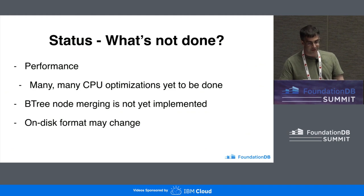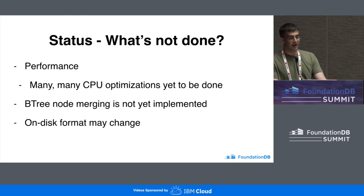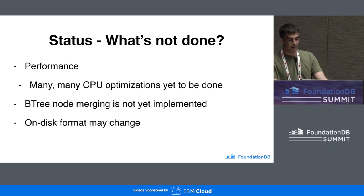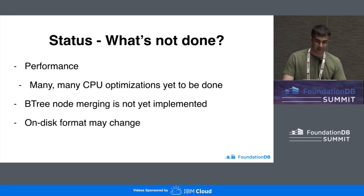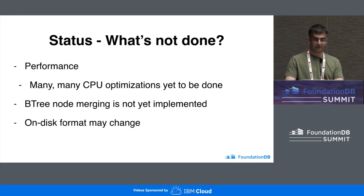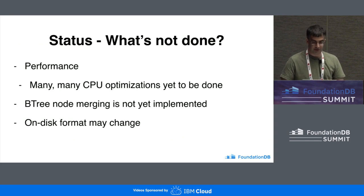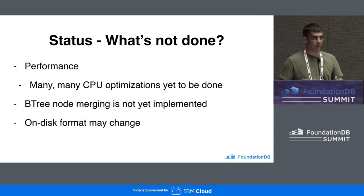So that all sounds great. What's not done? Performance — mainly because there are a lot of CPU optimizations that haven't been done yet. Earlier, Diego talked about one of them, where the mutation buffer definitely has some performance issues. Also notably, B-tree node merging is not yet implemented. You need node merging in a B-tree to reclaim accumulated slack space that you'll get within nodes over time by clearing keys. If you've cleared an entire page or set of pages, those pages will be freed, but if you only clear part of a page, you need to eventually reclaim that space.